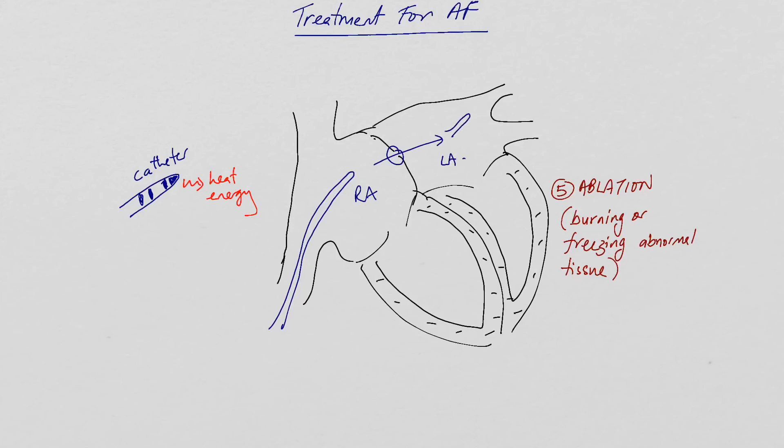Once in the left atrium, the mainstay of treatment is to draw a circumferential ring of ablation around the pulmonary veins to isolate these veins electrically, such that any activity coming from within the veins which trigger atrial fibrillation will be silenced and can no longer conduct into the body of the atria. This is called a catheter ablation strategy.